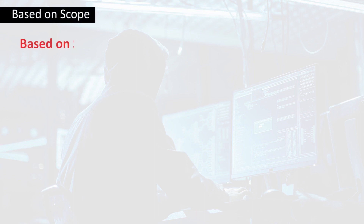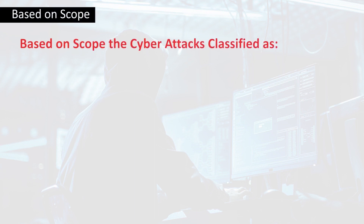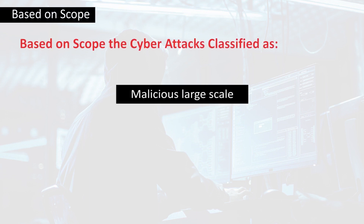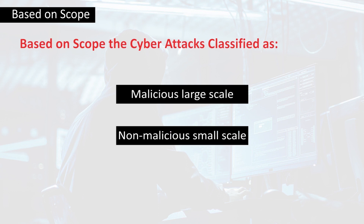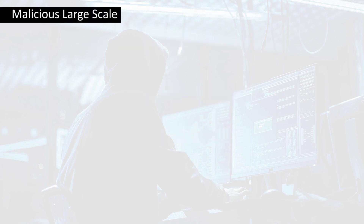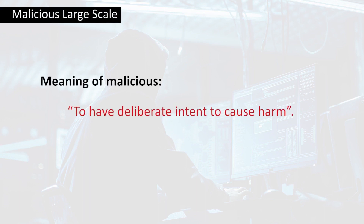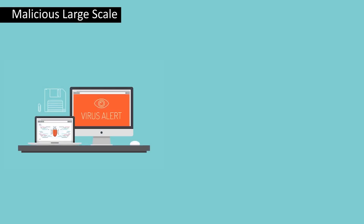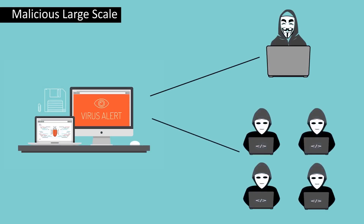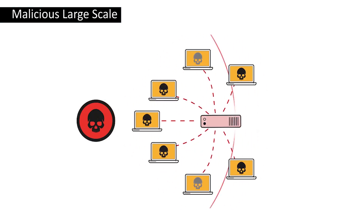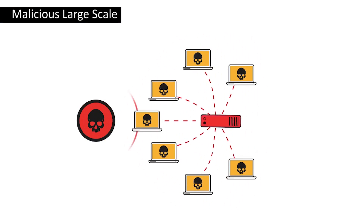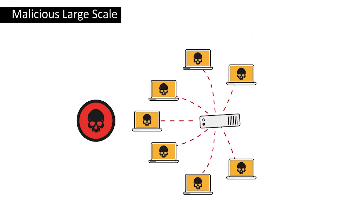Next, we will see how cyber attacks are classified based on scope. They are classified into two: malicious large scale and non-malicious small scale. Malicious large scale attacks have a deliberate intent to cause harm. These attacks are conducted by a single individual or group to obtain a private benefit or to trigger chaos and confusion, affecting countless systems and causing system crashes worldwide with massive data loss, thereby affecting integrity.